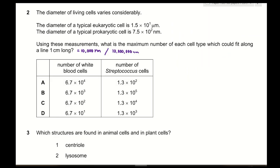Question 2: The diameter of living cells varies considerably. Using these measurements, what is the maximum number of each cell type which could fit along a one-centimeter-long line? I've converted one centimeter to micrometers and nanometers. For white blood cells, which are eukaryotic cells, we divide 10,000 micrometers by 1.5 × 10¹ micrometers, giving us 6.7 × 10².